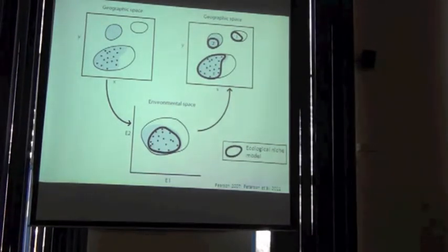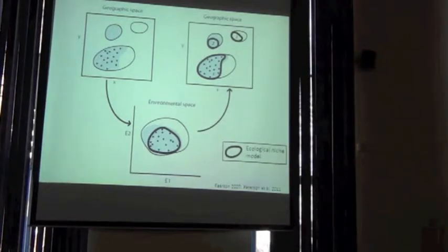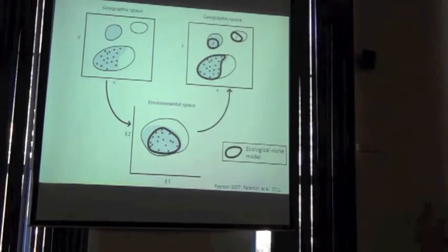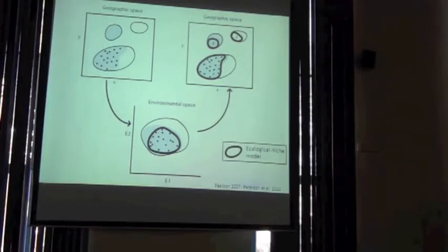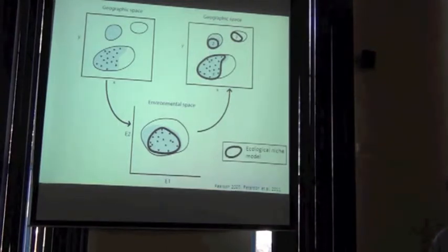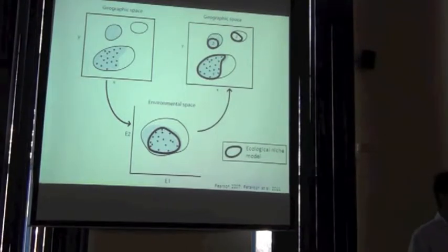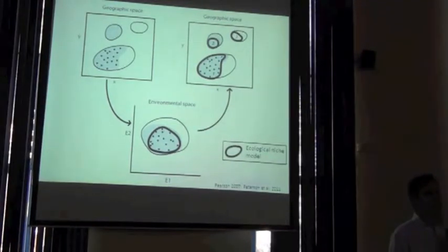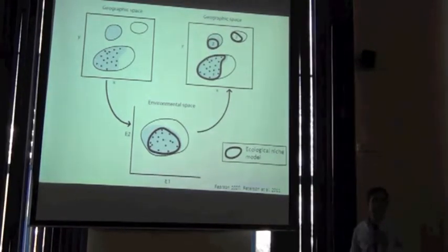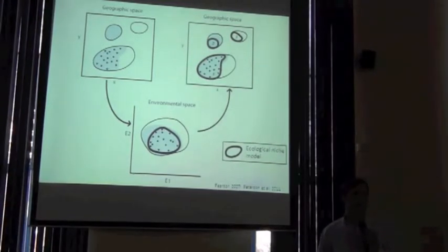We talked about potentially this area three here could be like invasive species. This is an area that's apparently unoccupied but perhaps could become occupied because the environment is suitable. We also talked about this area number two, where we don't have any known occurrence records of the species, but this is actually occupied by the species. This is an area we don't know is occupied, but in fact actually is. So the theory is that if we go there, we would expect to find the species and get some more occurrence records.